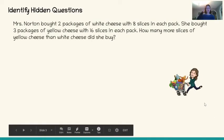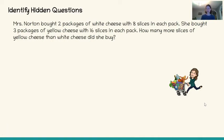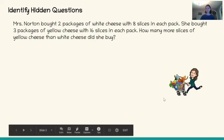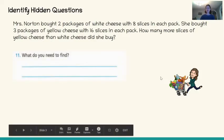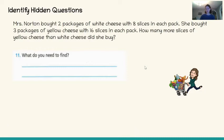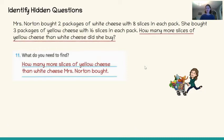So here's an example. Mrs. Norton bought two packages of white cheese with eight slices in each pack. She bought three packages of yellow cheese with 16 slices in each pack. How many more slices of yellow cheese than white cheese did she buy? So the first thing we need to figure out is what do we need to find? And the answer is we need to find how many more slices of yellow cheese than white cheese that Mrs. Norton bought.